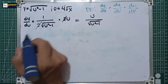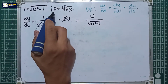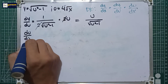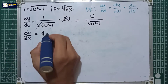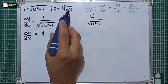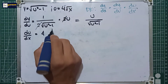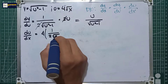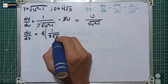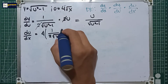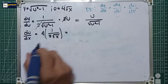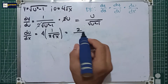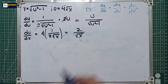Next, we derive the u equation with respect to x. So du over dx is equal to 4 multiplied by the derivative of square root of x, which is 1 over 2 square root of x, multiplied by the derivative of x which is 1. So du over dx is equal to 4 divided by 2, giving us 2 all over the square root of x.